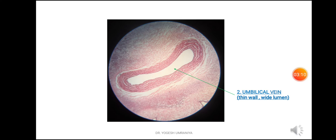This is the closer view of the umbilical vein. You can see the lumen is not circular as compared to the umbilical arteries, and the lumen is somewhat collapsed. The wall of the umbilical vein is thin as compared to the umbilical arteries, and the lumen is quite larger, wider, and more spacious as compared to the umbilical arteries.